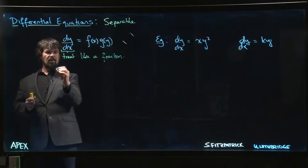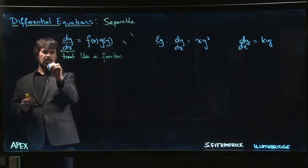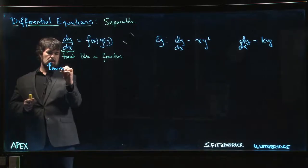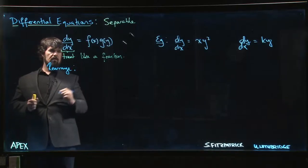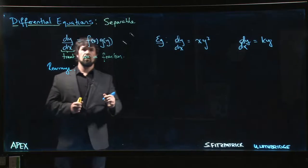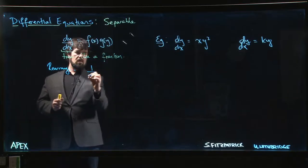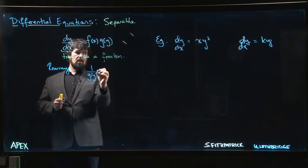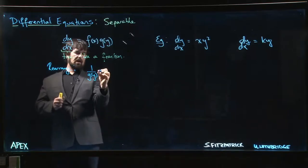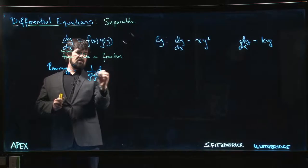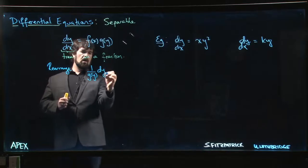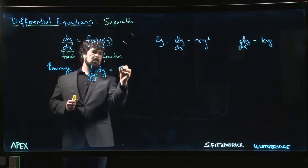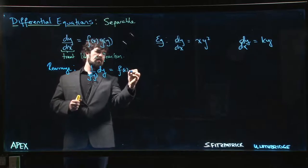So if you treat this like a fraction, then you can rearrange. What we're going to do is multiply by 1 over g(y), or divide by g(y), and multiply by dx. So we can rearrange like this: 1 over g(y) times dy equals f(x) times dx.